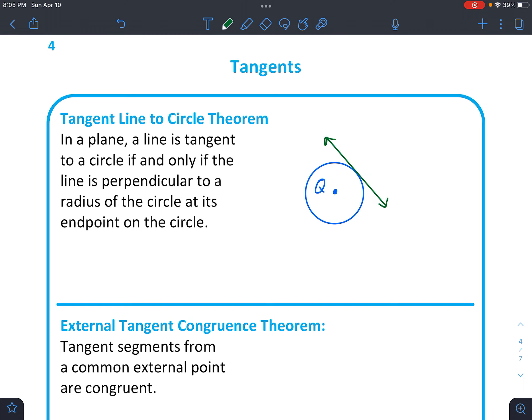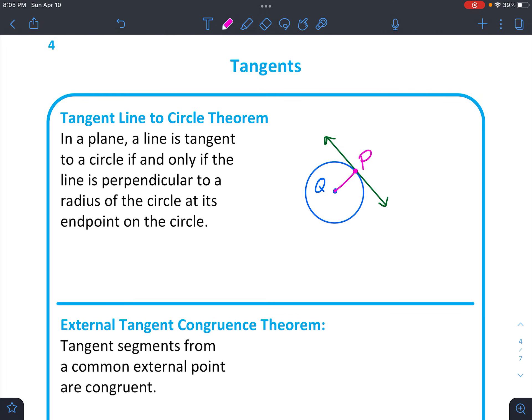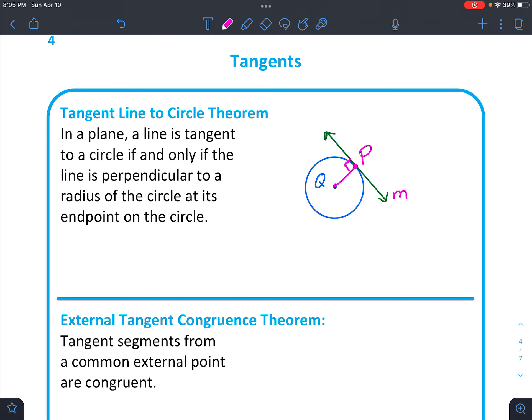It turns out that this theorem says that if you were to draw a line from the center to the tangent point, the point of tangency, we'll call this P, and that actually makes a perpendicular line. And we can say that we'll call this line M. You can say that M is perpendicular to QP to that segment.